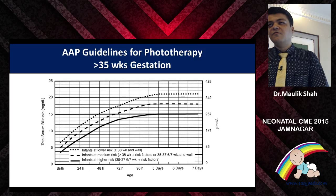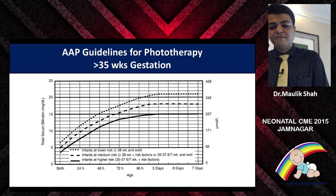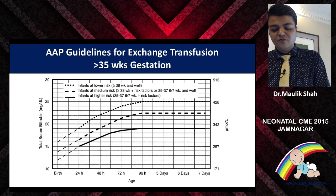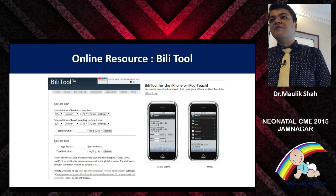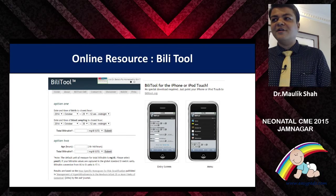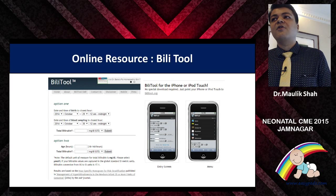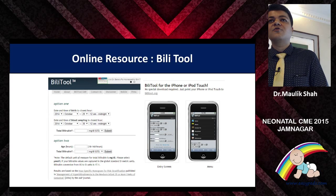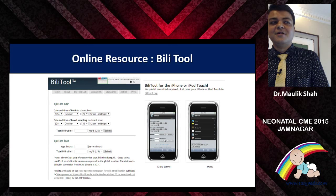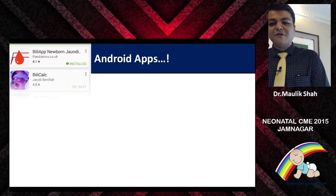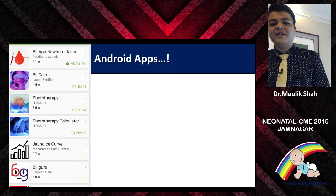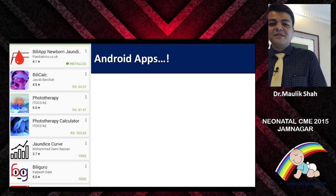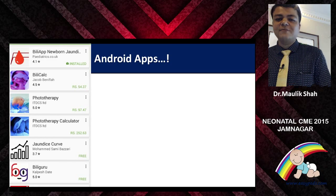The AAP guidelines — popularly known as Bhutani charts and AAP nomograms — are the guidelines for phototherapy initiation, continuation, and exchange transfusion. In the modern world of apps, one online resource available for computer, desktop, and mobile is the Billy Tool, available for iPhone. For Android, there are plenty of apps available including Billy app, Billy Cal, phototherapy calculator, and Billy Guru. The two most important free apps are Billy app and Billy Guru.